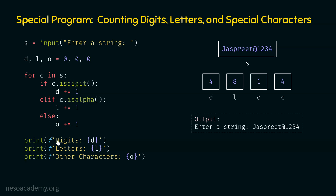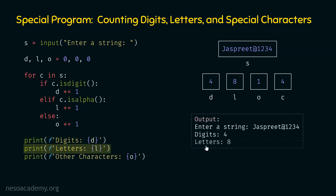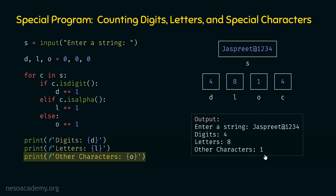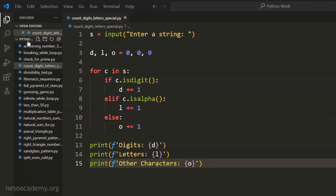I hope this is clear. We now execute the print functions and get the output on the screen: four digits, eight letters and one special character. I hope it is clear how this program works and how we are getting this output. Now we are ready to execute this program in Visual Studio Code. I have opened the folder 'python work' in Visual Studio Code, and within this folder I have created the file 'count_digits_letters_special.py', which contains the same code we saw in the presentation.